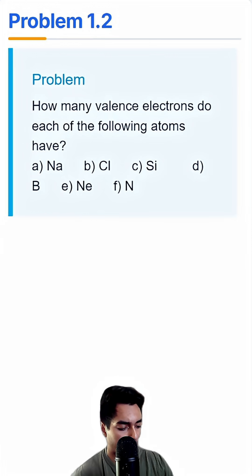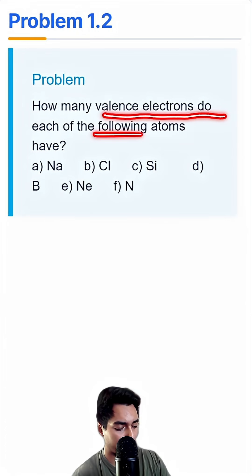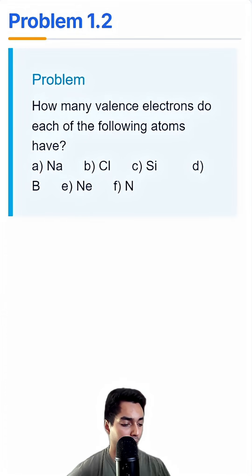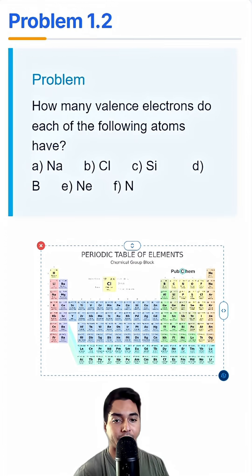Can you solve this chemistry problem? How many valence electrons do each of the following atoms have? The best way to go about this is to check a periodic table. Here's our hefty periodic table of elements.